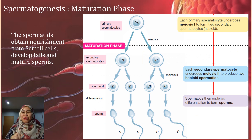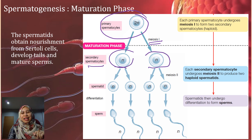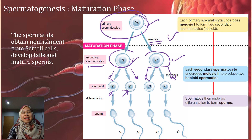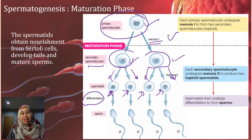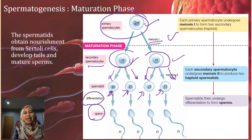The last stage is the maturation phase. In the maturation phase, the primary spermatocyte will undergo meiosis 1 to form two secondary spermatocytes. Because it undergoes meiosis 1, it goes from diploid (2N) to haploid (N). Each secondary spermatocyte will again undergo meiosis 2 to produce two haploid spermatids — so you have four spermatids in total. The spermatids obtain nourishment, that is nutrients, from the Sertoli cell, and develop a tail to mature into sperm.